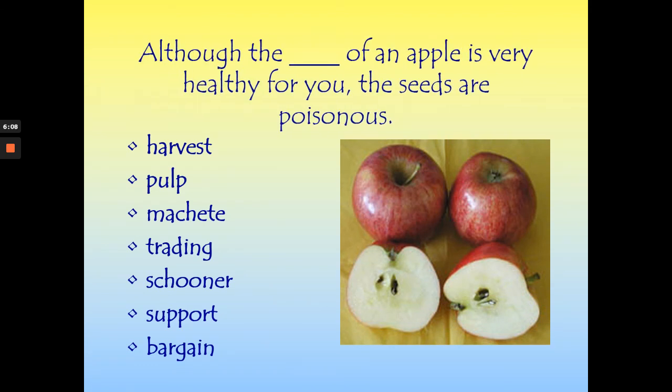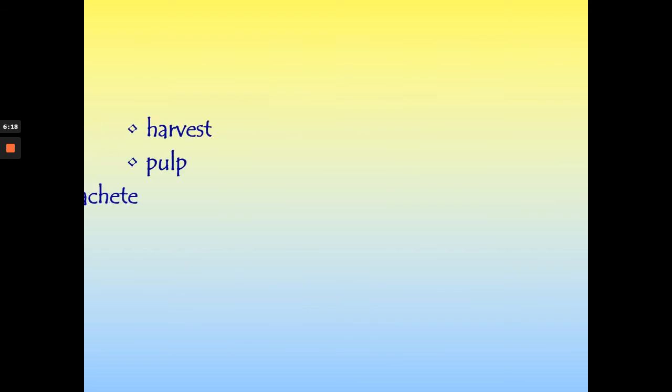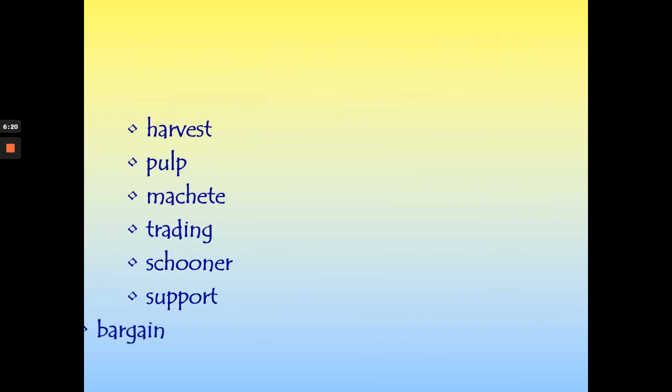'Although the blank of an apple is very healthy for you, the seeds are poisonous.' What part of the apple do we eat? We eat the pulp of the apple. So the word in that blank would have been pulp.